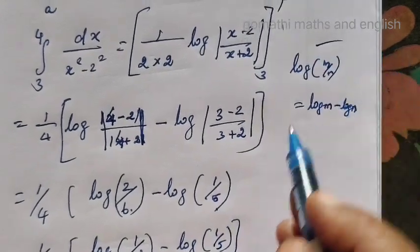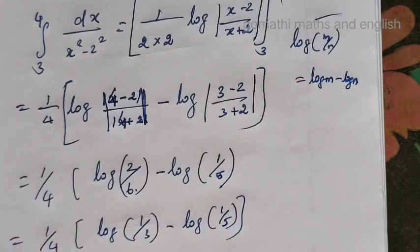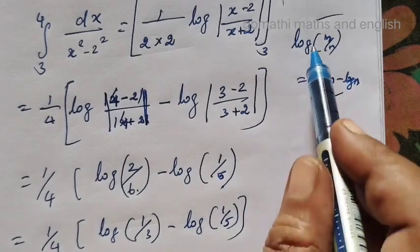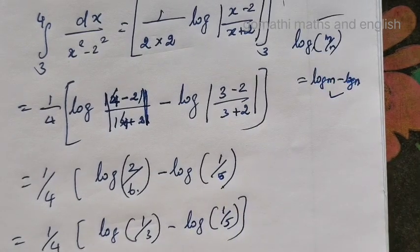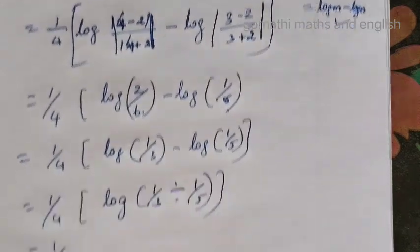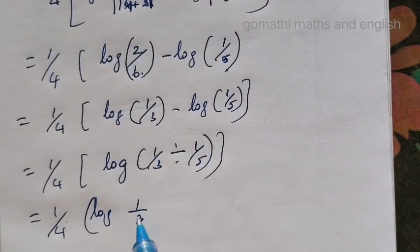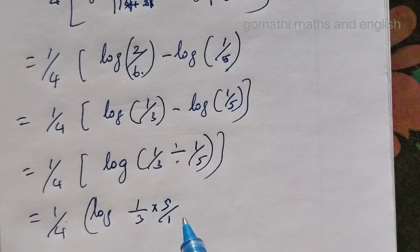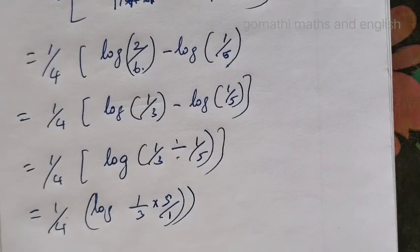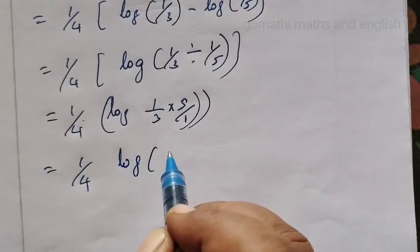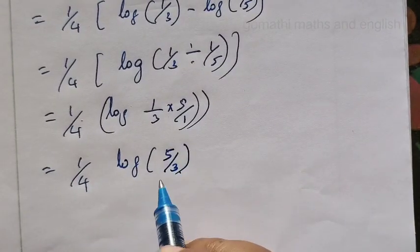We know the formula log m over n equals log m minus log n. So, 1 over 4, log of 1 over 3 times 5 over 1, which equals 1 over 4, log 5 over 3.